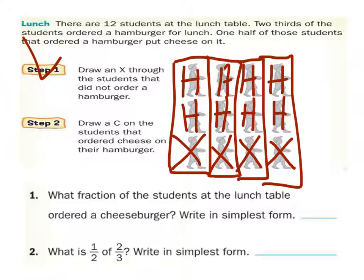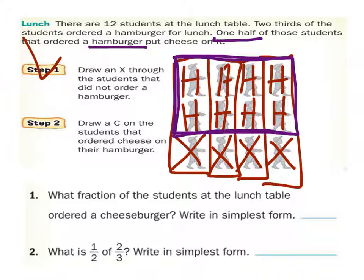Let's look at step two now. It says one half of those that did order a hamburger, so we're just looking now at these eight. It says one half of the eight actually ordered their hamburger with cheese.